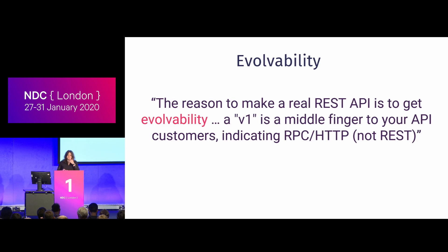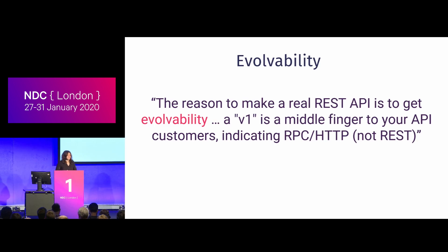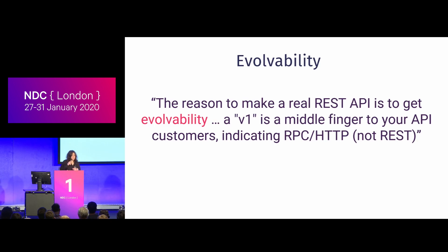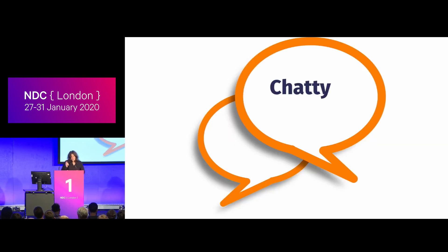Here's a quote: 'A reason to make a real REST API is to get evolvability. A V1 is a middle finger to your API customers, indicating that it's not REST — it's HTTP RPC style.' Who said that? The inventor of REST, in 2003, on a tweet. It's very real. If you have V1, you'll pretty much stick with V1. Versioning in REST APIs should be done through headers, because they say cool URIs don't change.